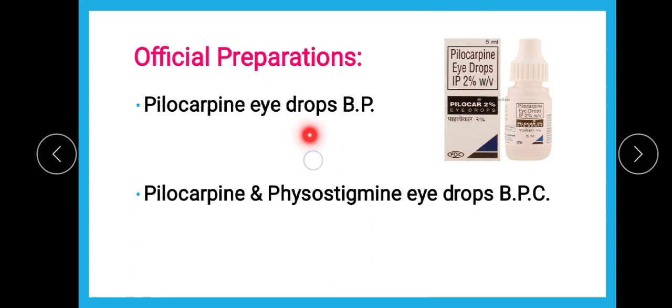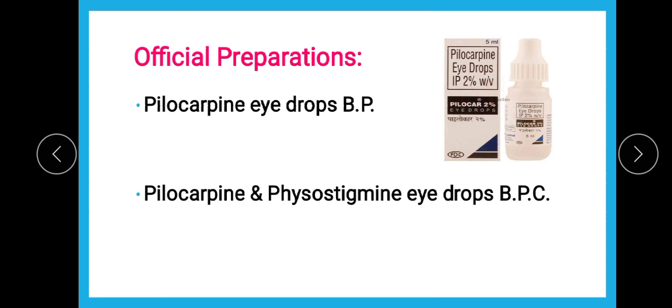Pilocarpine eye drops are official in the British Pharmacopoeia. The combination eye drops — pilocarpine and physostigmine — are official in the British Pharmaceutical Codex (BPC). Note that physostigmine is also a cholinomimetic but an indirect acting one. Pilocarpine eye drops IP 2% w/v is manufactured under the brand name Pilocarp or Pylocar.